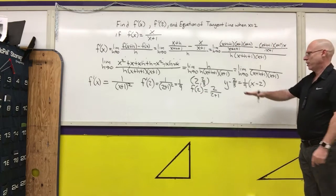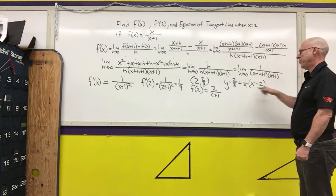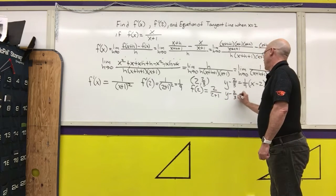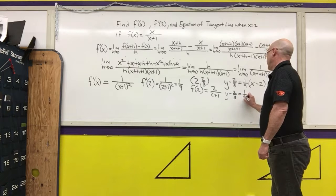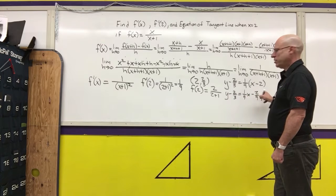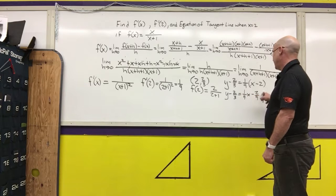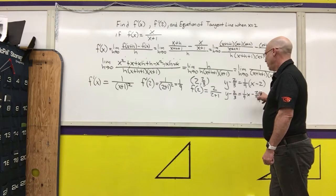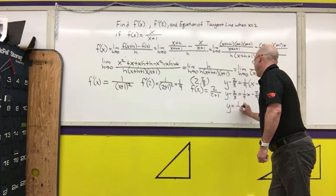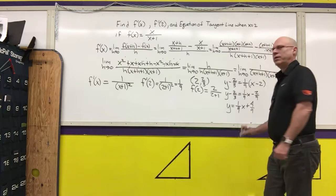If I just ask you to write the equation for a line, you can stop here. If I ask you to write it in slope-intercept form, we've got two more steps. We have to distribute and then add. So I get y minus 2/3 equals 1/9 x minus 2/9. I'm going to add 2/3, which is 6/9. 6/9 minus 2/9 is 4/9. So my final equation would be y equals 1/9 x plus 4/9.